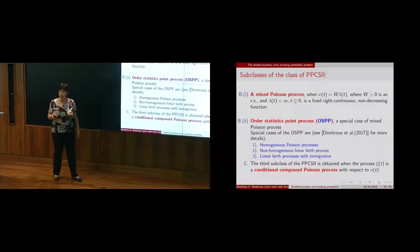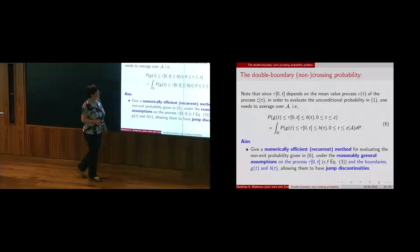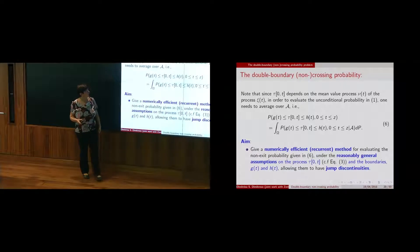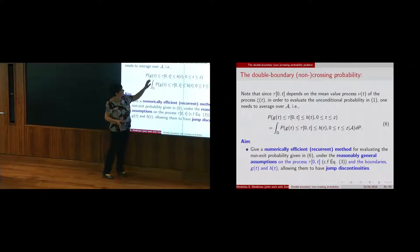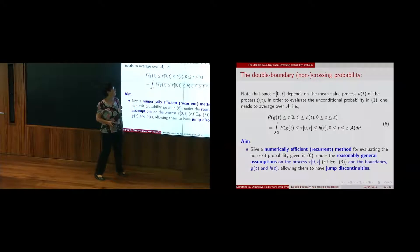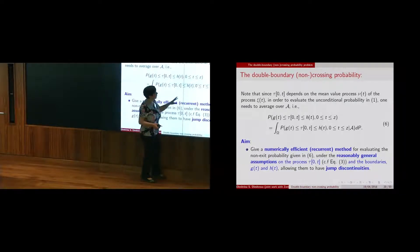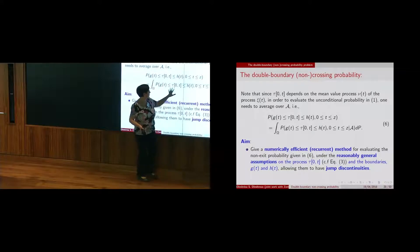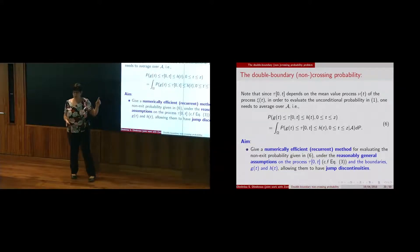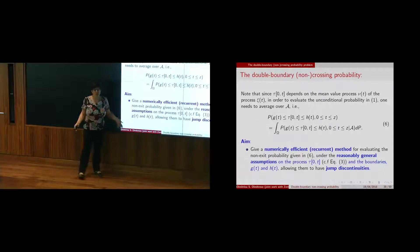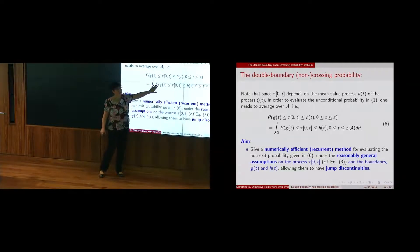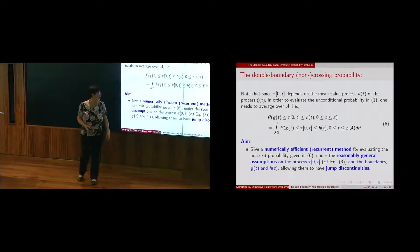The assumption on the arrival process is quite general, and the methods we develop work for any of these subclasses. To compute the unconditional non-crossing probability when the mean value function nu is stochastic, we condition and average the conditional probabilities to get the unconditional one. This is necessary, for example, for Cox processes, whereas for homogeneous Poisson there is no such averaging — we directly compute the unconditional probability.